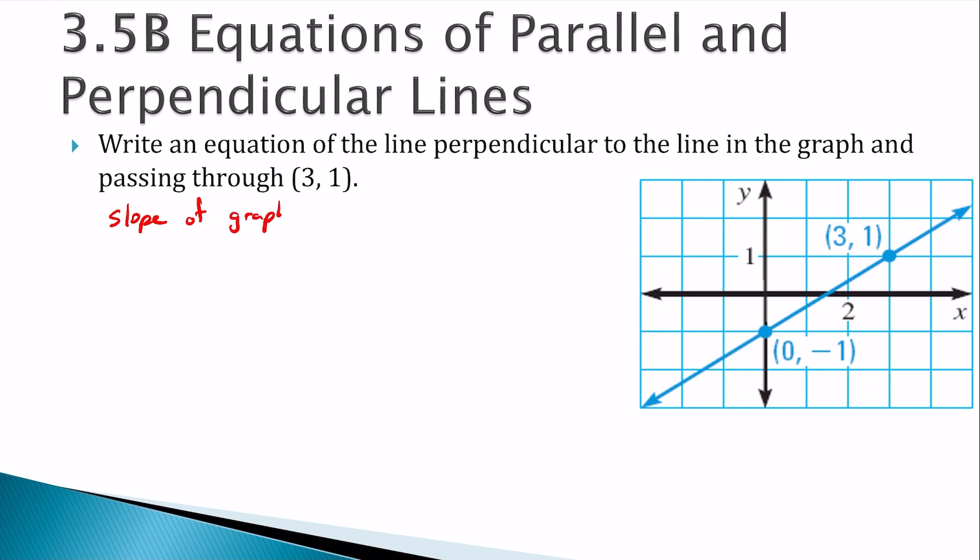So the slope of the graph, well, we could use the slope formula. First point could be x1, y1. The second point could be x2, y2. So my slope would be y2 minus y1 over x2 minus x1, or 2 over 3.